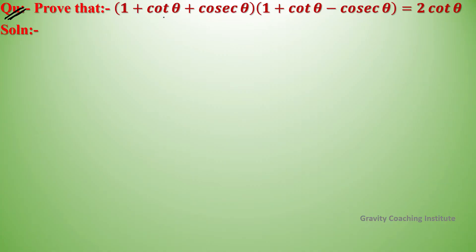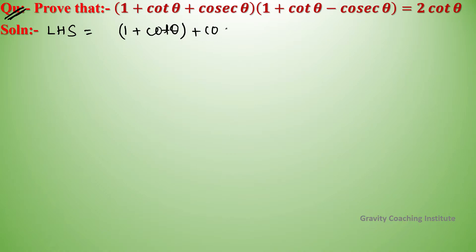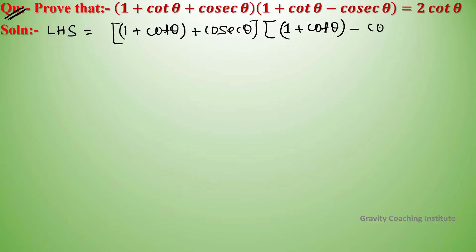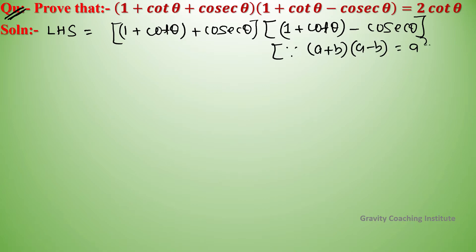Prove that (1 + cot θ + cosec θ)(1 + cot θ - cosec θ) = 2 cot θ. Here LHS is equal to (1 + cot θ + cosec θ)(1 + cot θ - cosec θ). We use the identity (A + B)(A - B) = A² - B².